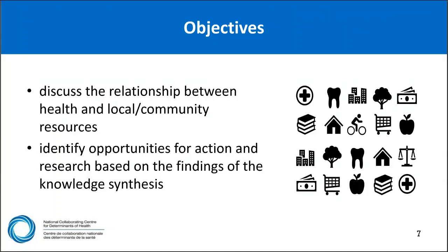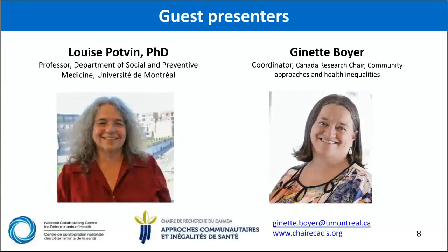The objectives of our webinar today are to talk about the relationship between health and local resources. We know that health happens where we live, work, and play, but what do we really know about how community-level resources impact health? Our presenters, Dr. Louise Potvin and Jeanette Voyer, will be talking to us about the findings of an umbrella review they just recently completed. We'll also have an opportunity to talk about what this means in terms of action and research.